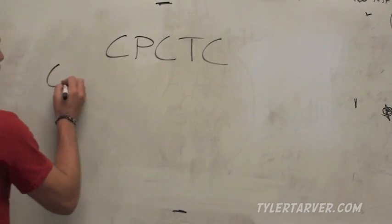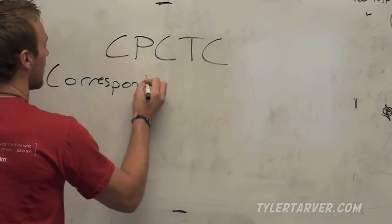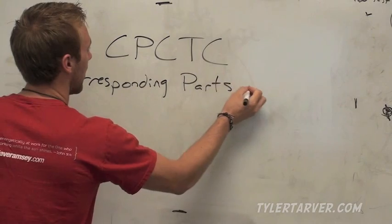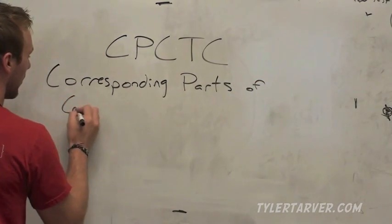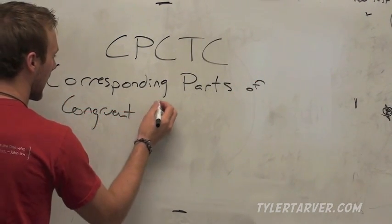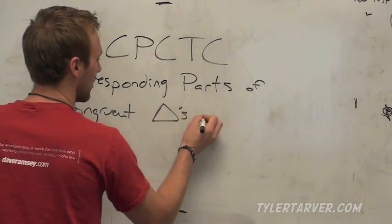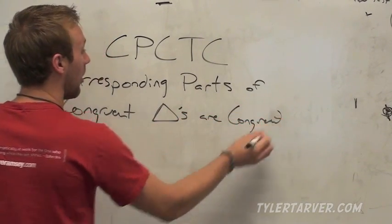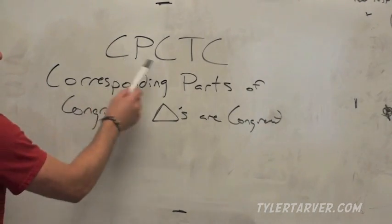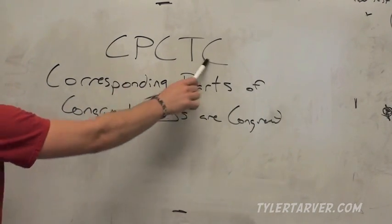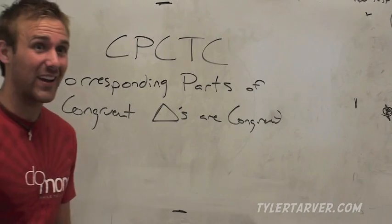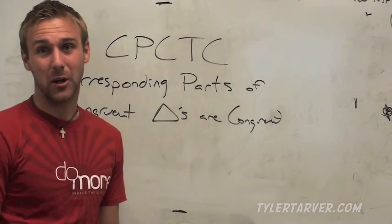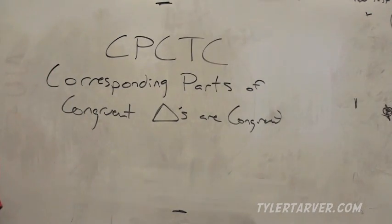It's called corresponding parts of congruent triangles are congruent. And you're thinking, oh my goodness, that almost without the 'of' and the 'or', that pretty much spells out that. And you're thinking, what are the odds of that happening? Well, pretty good seeing as how that's the reason they called it. Or CPCTC.